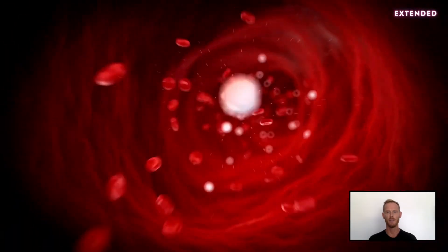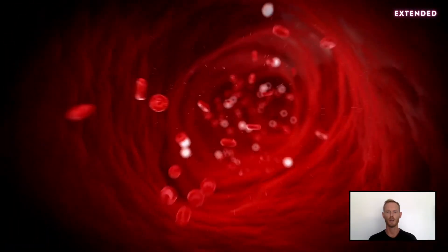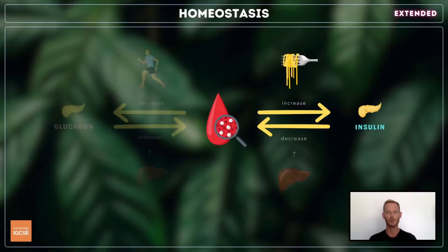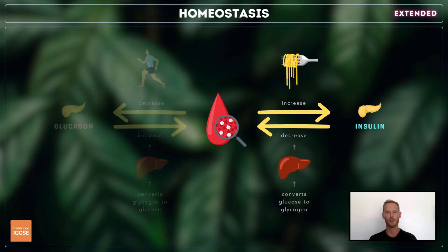A negative feedback mechanism is used to control blood glucose levels. Whenever blood glucose level increases beyond the set point — for example, soon after consuming a carbohydrate-rich meal — the higher concentration of glucose is detected and the pancreas is stimulated to secrete the hormone insulin. Insulin returns blood glucose level to the set point as it stimulates the liver to remove excess glucose from the blood and convert it to glycogen for storage.